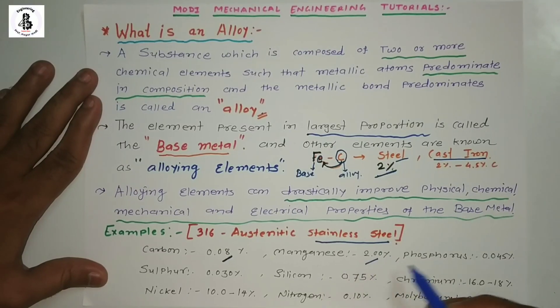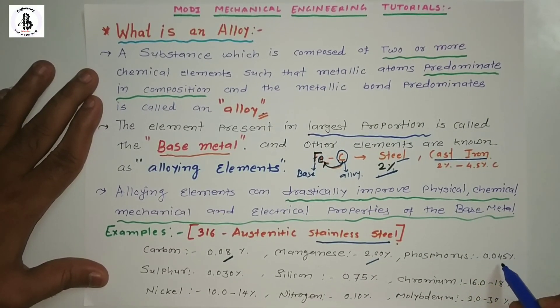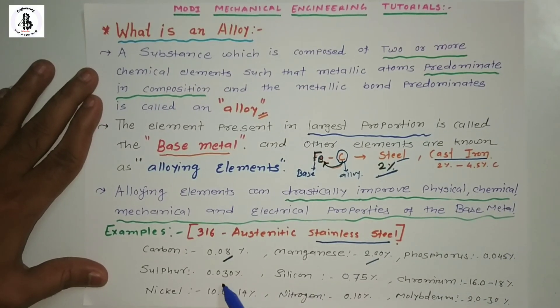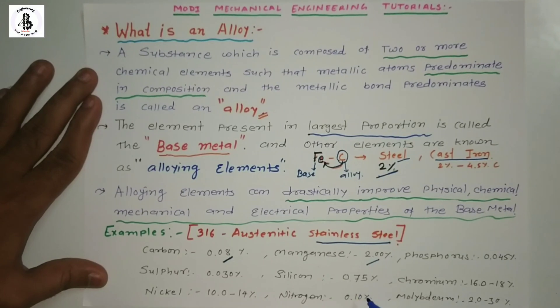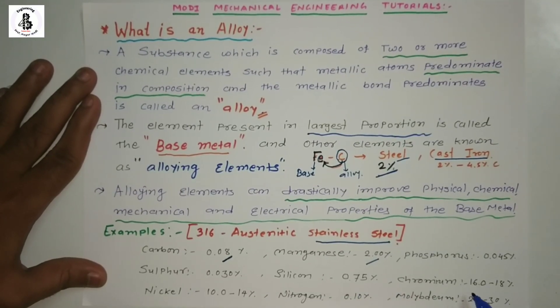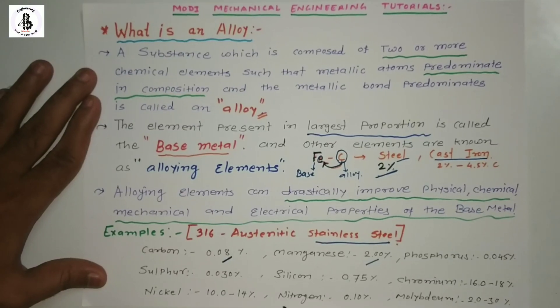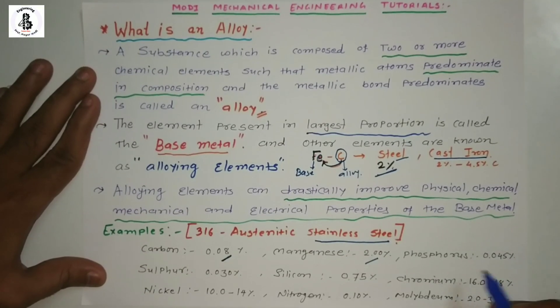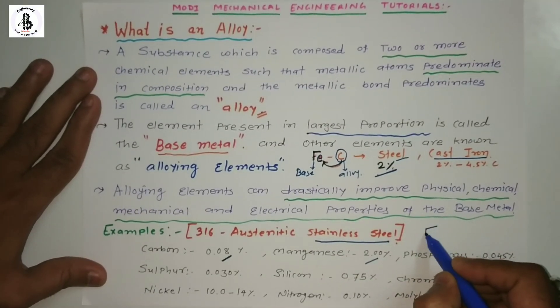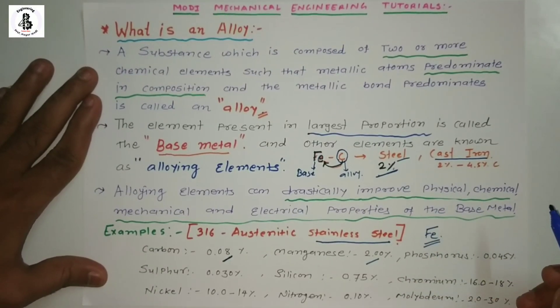The composition includes manganese 2%, phosphorus 0.045%, sulfur 0.030%, silicon 0.75%, chromium 16-18%, nickel 10-14%, nitrogen 0.10%, and molybdenum 2-3%. The rest is Fe, which has the largest proportion.